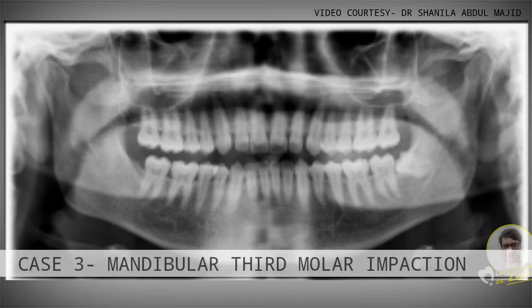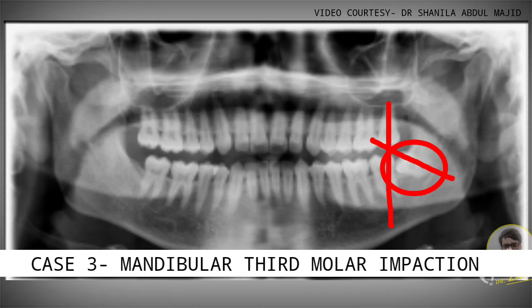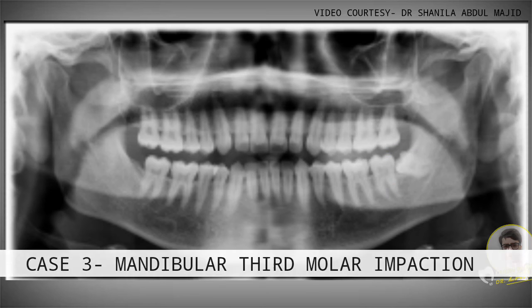The next case scenario is a mandibular third molar impaction in the region of 38, where the long axis of 38 is found to be more perpendicular when compared to the long axis of 37. This can be considered a horizontal impaction in relation to 38.